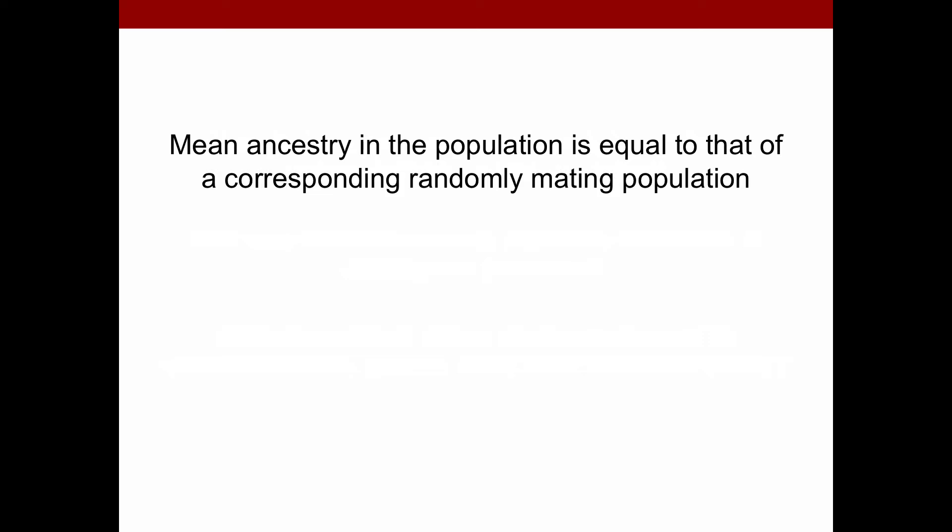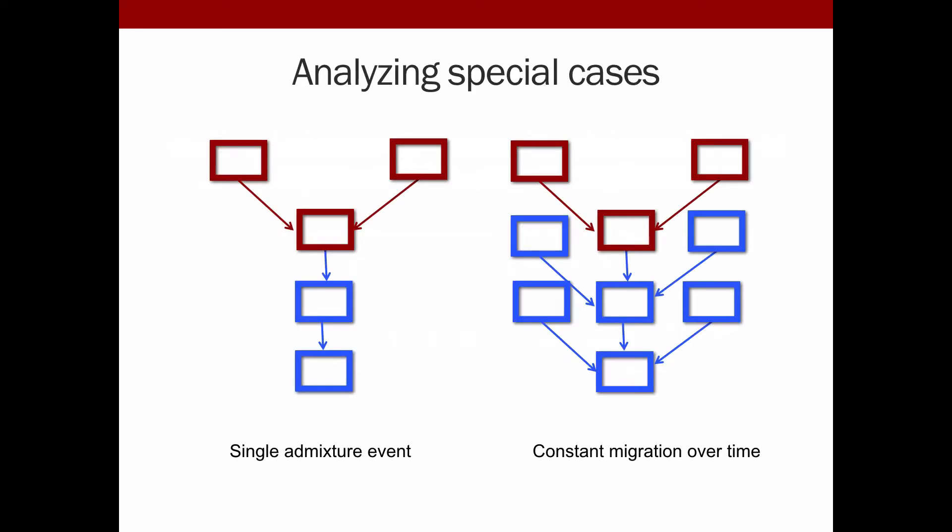But the rest of the distribution, the higher moments do change. To look at that, we're going to analyze two special cases to get exact solutions under our model. The first is a single admixture event, where you found the hybrid population, but have no further contributions. The second is a constant migration after founding model. Under these models, we can solve for closed form solutions for the moments of the distribution of ancestry in the population. These exact solutions are important to identify which parameters the moments depend upon. We can also prove long-term behavior by having exact solutions and down the road perform fast inference under the model by having these closed form solutions.